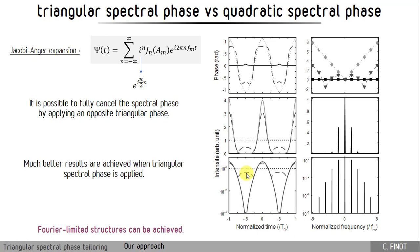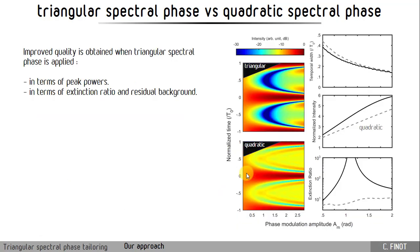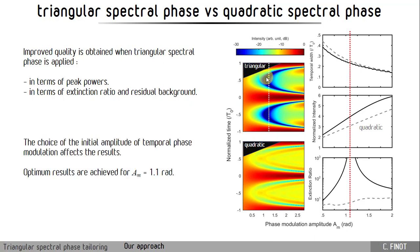Here we have a very strong improvement. We just have to choose carefully the level of the initial phase modulation, because these very nice results are just obtained for a narrow band. Here, typically, a modulation around 1.1 radians. In all cases, we have an improvement in terms of peak power and in terms of extinction ratio, and the optimum results are for 1.1 radians. And we are currently developing an analytical background to prove it more rigorously.